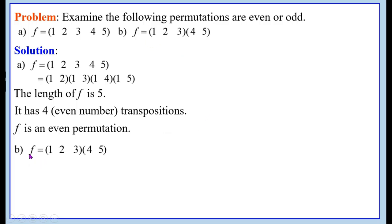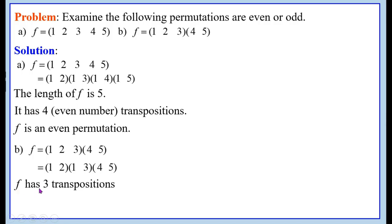Second example: F equals the product of cycles (1, 2, 3) and (4, 5). Here (4, 5) is a transposition — we need not disturb it. Cycle (1, 2, 3) has length 3 and hence must have 2 transpositions: (1, 2)(1, 3). Therefore F = (1, 2)(1, 3)(4, 5), which is a product of 3 transpositions. Since 3 is an odd number, F is an odd permutation.